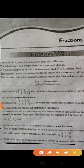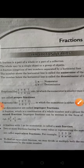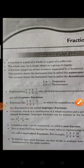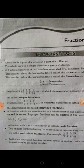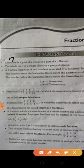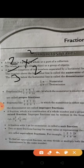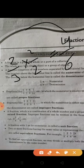To find an equivalent fraction, we may divide or multiply both the numerator and the denominator by the same number. If 2 upon 3 is the given fraction and we have to find its equivalent fraction, we multiply both numerator and denominator by 2, giving us 4 upon 6. So 4 upon 6 is the equivalent fraction of 2 upon 3.